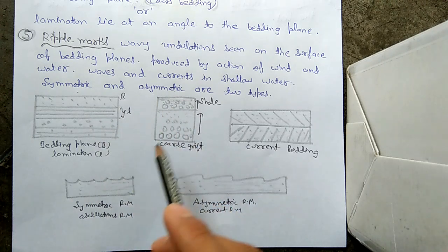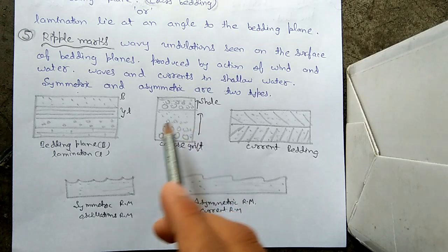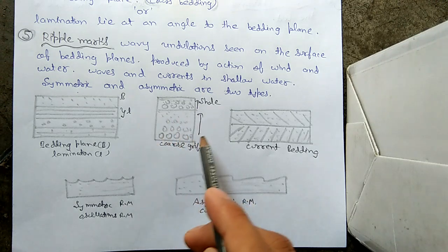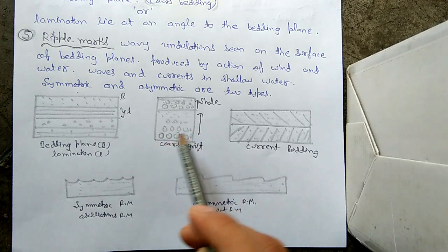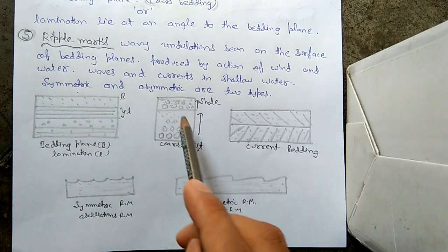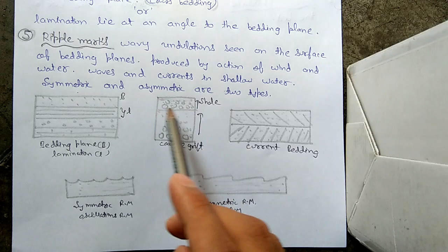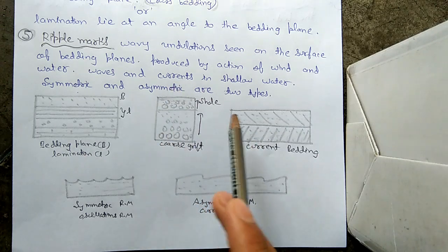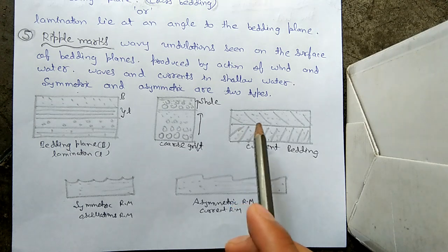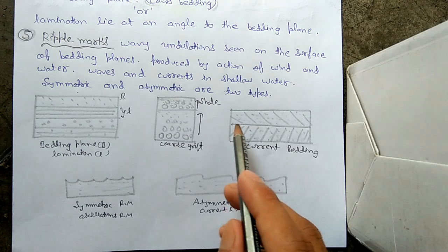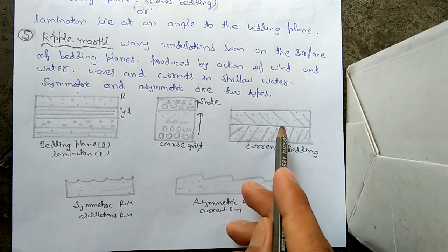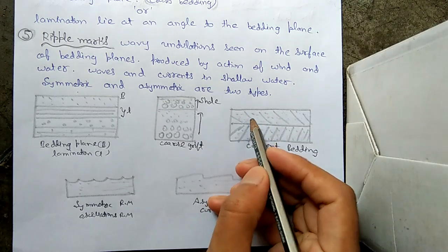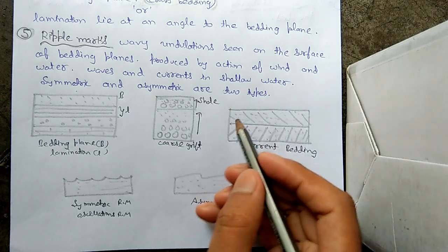For graded bedding in the diagram, there is gradation in size — larger coarse grains are below and smaller fine grains are above. This is seen in coarse-grained rock as well as in shale. For current bedding, the bedding plane is the lower line, and the overlying plane makes an angle with the bedding plane.